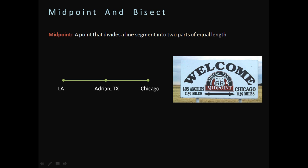Texas just happens to be right in the middle of this road. So looking over here at our line segment, this is a good model of what Route 66 could be like. We can go from Point LA over here to Point Chicago, and it says that Adrian, Texas is right in the middle. So that means Adrian, Texas is the midpoint of our Route 66 line segment.